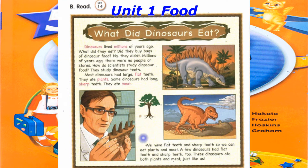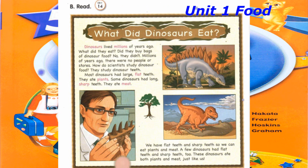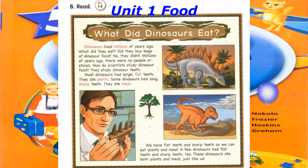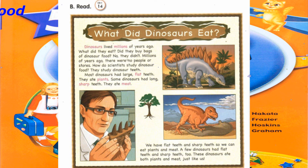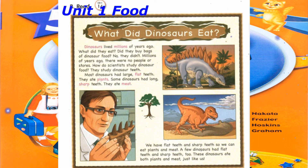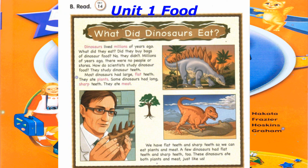Track 14. B. Read. What did dinosaurs eat? Dinosaurs lived millions of years ago. What did they eat? Did they buy bags of dinosaur food? No, they didn't. Millions of years ago, there were no people or stores. They studied dinosaur teeth. Most dinosaurs had large, flat teeth — they ate plants. Some dinosaurs had long, sharp teeth — they ate meat. We have flat teeth and sharp teeth, so we can eat plants and meat. A few dinosaurs had flat teeth and sharp teeth, too. These dinosaurs ate both plants and meat, just like us.